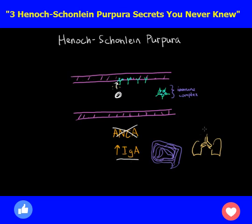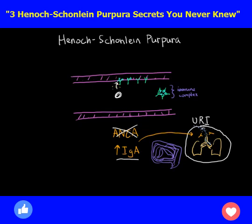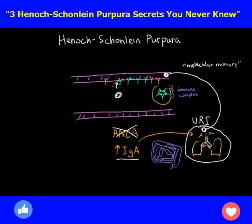Henoch-Schönlein purpura is associated with upper respiratory infections. It's believed that some pathogen gets into the respiratory tract, causes an infection, and triggers release of IgA to combat the infection. However, coincidentally, these pathogens share similar components that look like the wall of blood vessels. This similarity is called molecular mimicry, and it's believed that antibodies released in response to an upper respiratory infection also accidentally attach onto blood vessel walls. Immune complexes also form as a result. This molecular mimicry — this case of mistaken identity — is really the cause of the disease process.